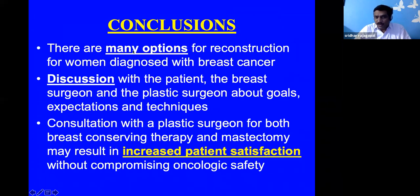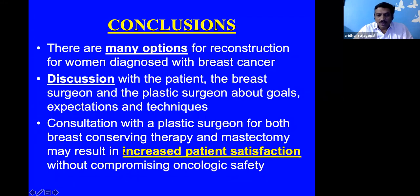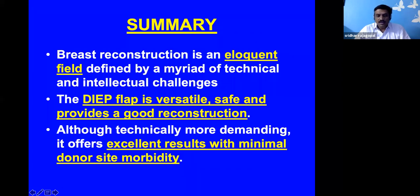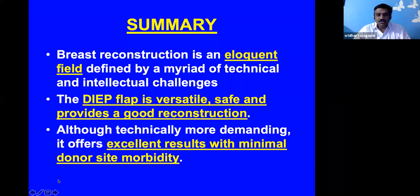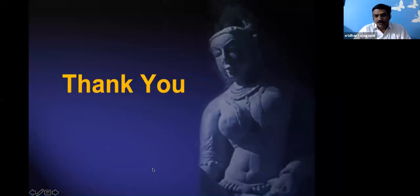In conclusion, there are many options for reconstruction for women diagnosed with breast cancer. Discussion must occur between patient, breast surgeon, and plastic surgeon — for both breast conserving therapy and mastectomy — as it increases patient satisfaction. For advanced stage malignancy, whenever feasible, a free flap is the best option. Among free flaps, the deep inferior epigastric artery perforator flap is versatile, safe, provides good reconstruction, excellent results, and patients are generally very happy with the donor site.